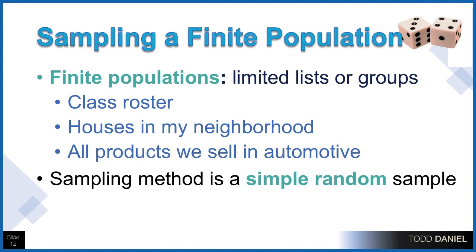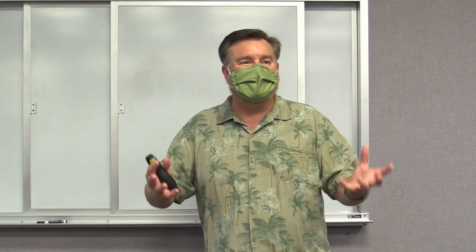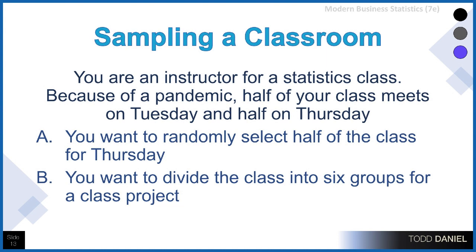The sampling method we will use with a finite population is a simple random sample. Let's take an example. You are an instructor for a statistics class, and because of a pandemic, half of your class meets on Tuesday and half meets on Thursday. You want to randomly select which half comes on Tuesday versus Thursday, and divide the class into six groups for a class project — with no finagling, done fairly and above board.